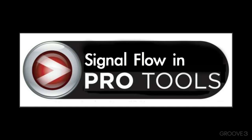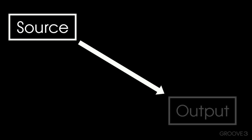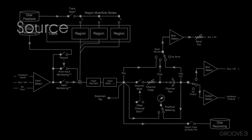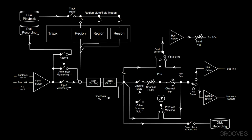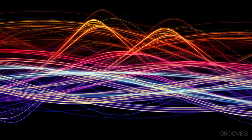Signal flow is the path an audio signal takes from source to output, including all the processing involved in generating audible sound from electronic impulses or recorded media.